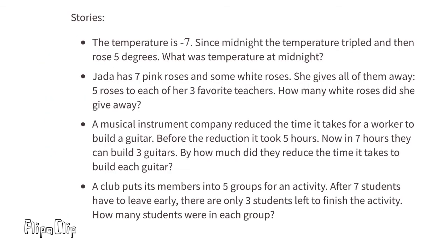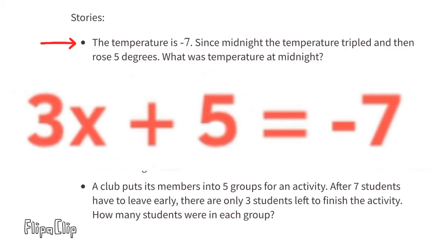The solution for equation c is the first solution, negative 4. The story that best matches equation c is the temperature story. The temperature is negative 7 — represented by equals negative 7. The temperature tripled — represented by the 3, and the temperature itself is x, so 3x means triple the temperature. The temperature also rose 5 degrees, represented by plus 5.